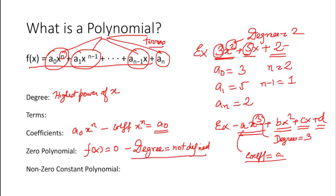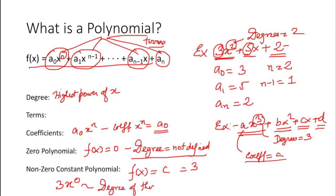Next is a non-zero constant polynomial. What is a non-zero constant polynomial? It is of the form f(x) equals c, where c is any constant value. For example, f(x) equals 3 — it would not have any terms involving x. We can also write it as 3 times x to the power 0. The degree of this polynomial is equal to 0, and it is called a non-zero constant polynomial. The value c cannot be 0; if c equals 0 we call it a zero polynomial, in which the degree is not defined.